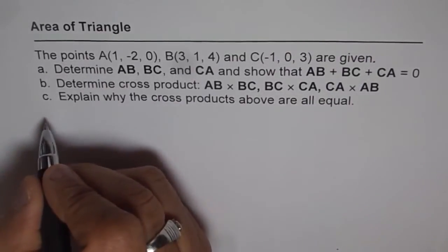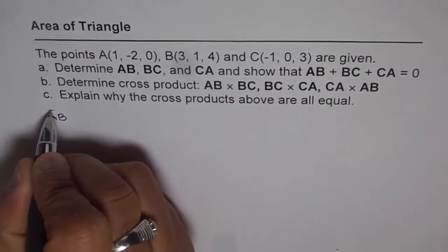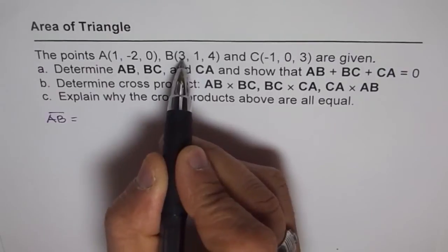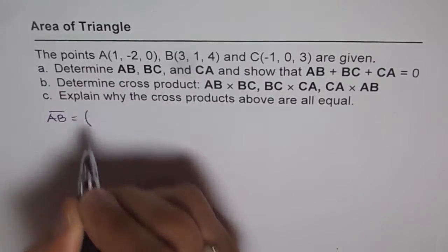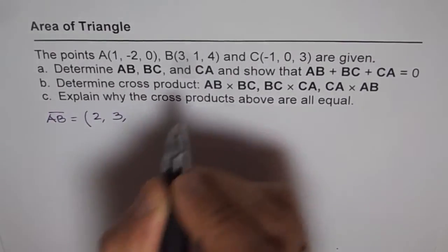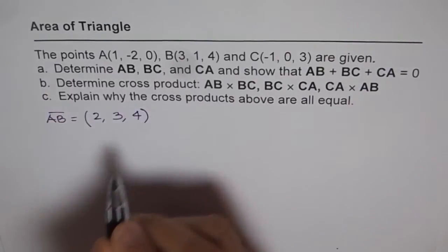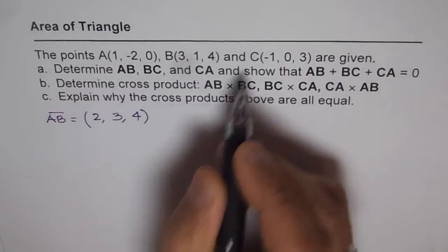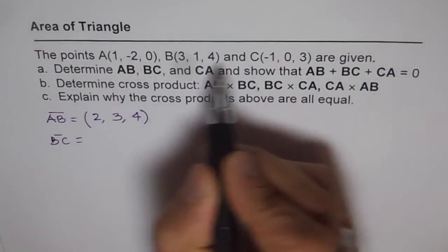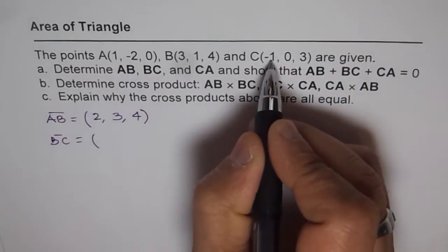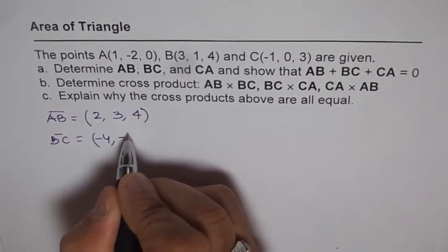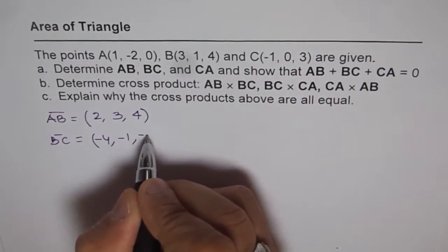First let's find AB. AB means from A to B, so we take the difference of B's coordinates minus A's. So 3 minus 1 is 2, 1 minus (-2) will be 3, and 4 minus 0 is 4. Now let's do BC, which means we subtract B's coordinates from C's.